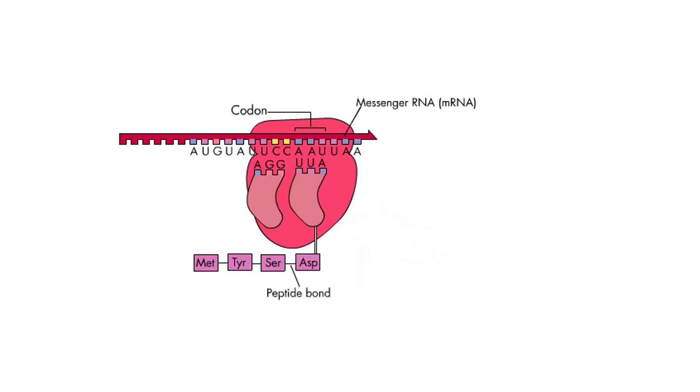This process repeats hundreds of times to make a protein, with the growing polypeptide passed onto each new tRNA. Elongation is amazingly fast. It only takes about 20 seconds to make a protein as large as AT3, which is 464 amino acids long.